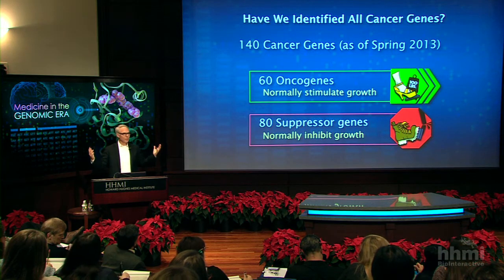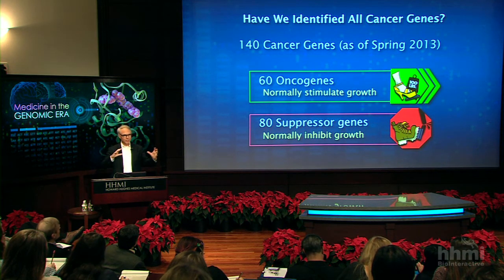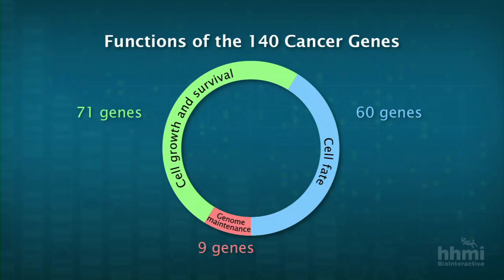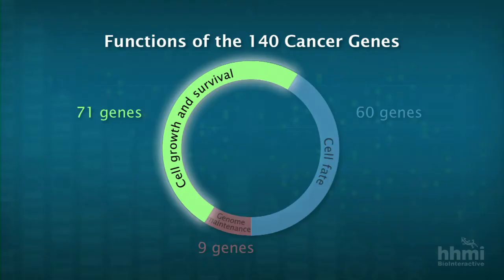We can really start to envision complete understanding of all the genetic causes of cancer. With 140 cancer genes, can we now categorize them into different buckets and see some patterns that are emerging? The answer is yes. There are three different categories that this community of cancer scientists has agreed upon. I suspect there will be additions and perhaps new categories that emerge, but they're not going to be big dominant causes of major percentages of cancer. Let's look at the 71 cell growth and survival genes.